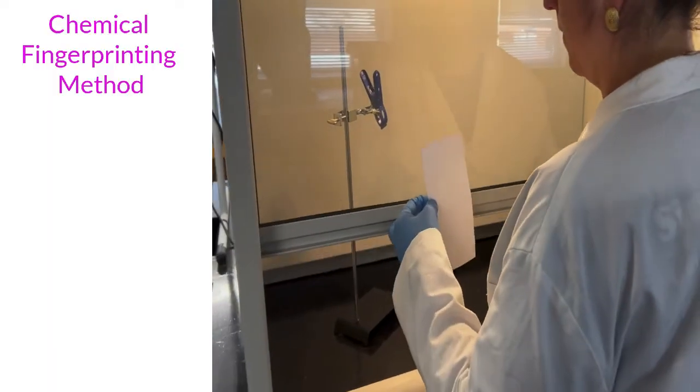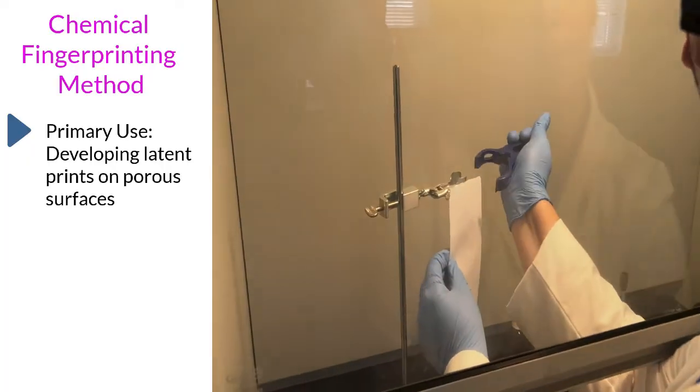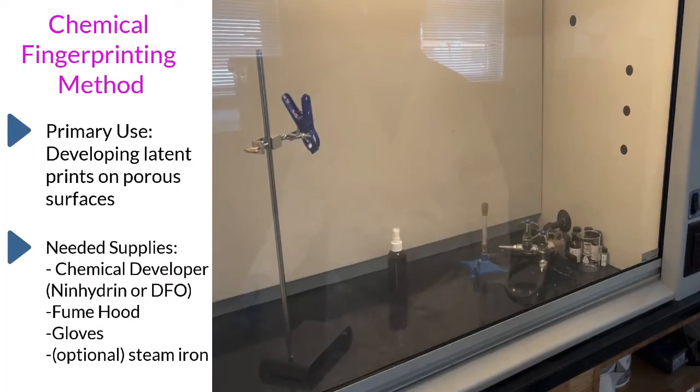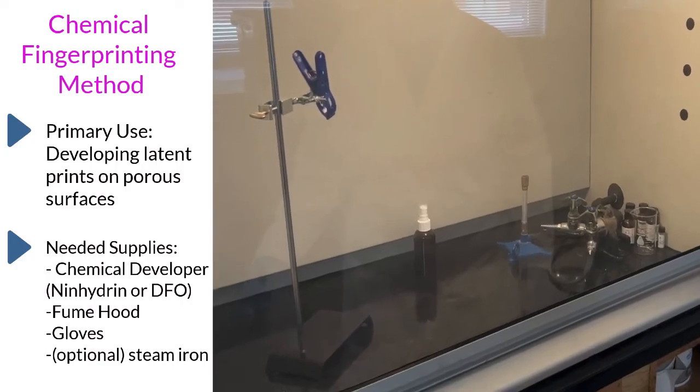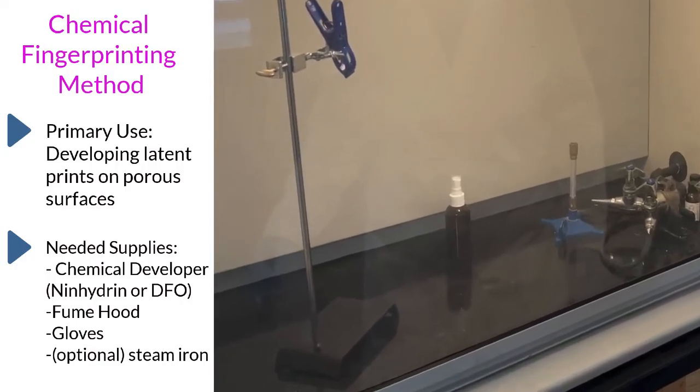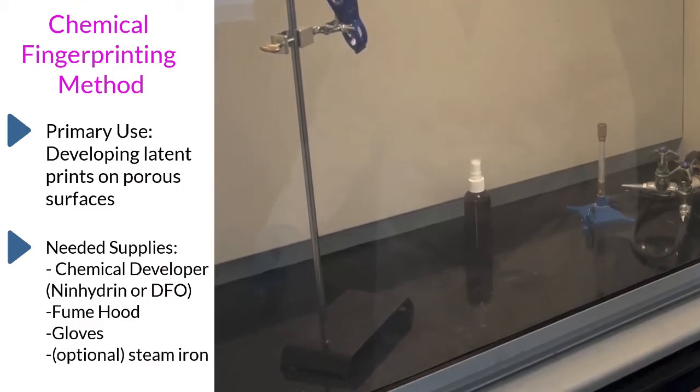Developing latent fingerprints with chemicals is the preferred method for developing prints on porous surfaces such as paper. The supplies needed for chemical development include a chemical developer of either ninhydrin or DFO. Note in this example we will be using ninhydrin. A fume hood, gloves, and a steam iron may optionally be used to speed up results.